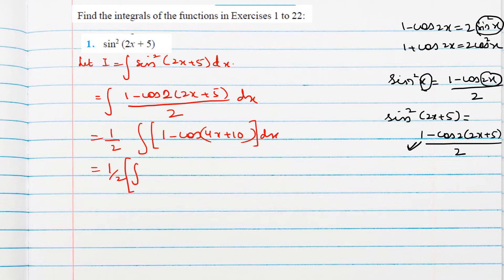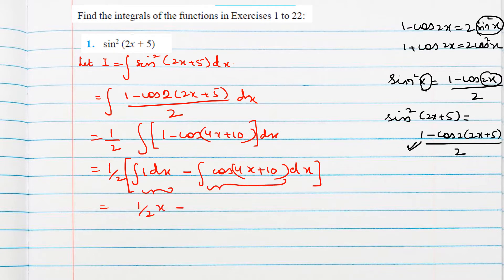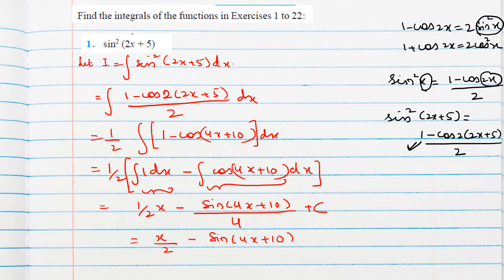Separating the integral: ∫1 dx − ∫cos(4x + 10) dx. We know the integral of 1 is x, and the integral of cos is sin of the angle. Since the angle is composite, we divide by its derivative, which is 4. So the final answer is x/2 − sin(4x + 10)/8 + C.